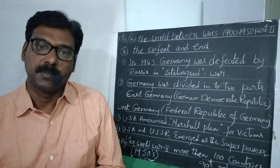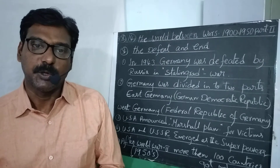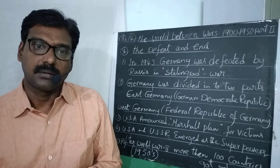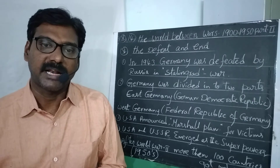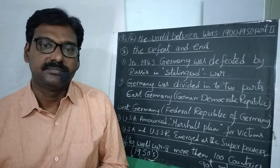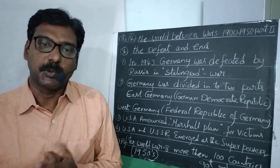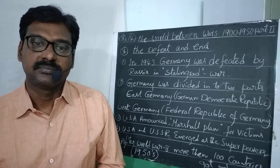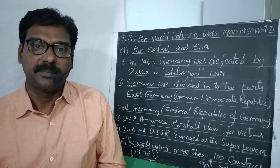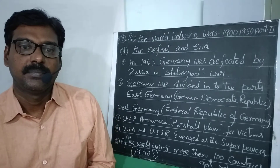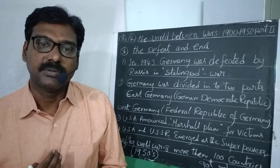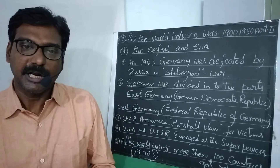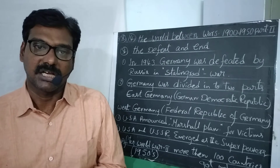During World War 2, Japan attacked in 1942. Then America dropped two atom bombs over Japan — over Hiroshima and Nagasaki.